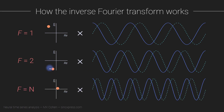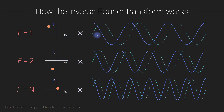You continue this process up to n coefficients, because you have n time points and therefore n frequencies. For each one you're multiplying the Fourier coefficient by the corresponding template complex sine wave. Once you have all n modulated complex sine waves, you simply sum them all together, and that gives you the time domain signal.